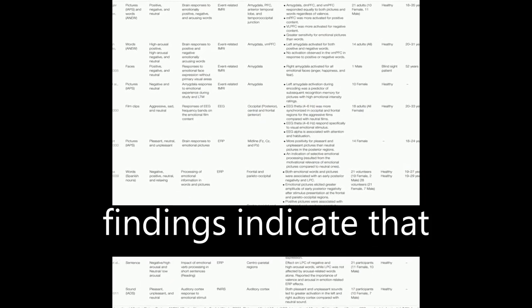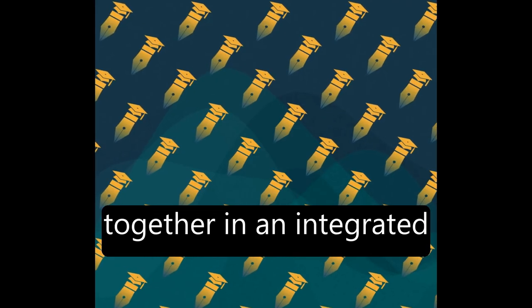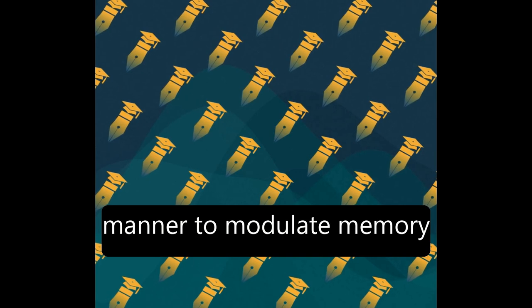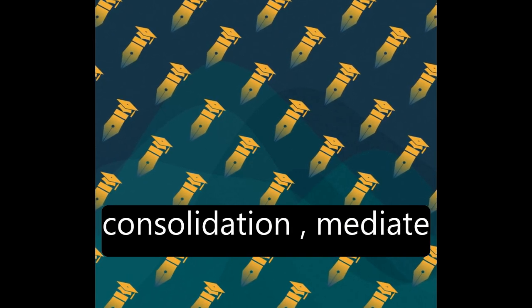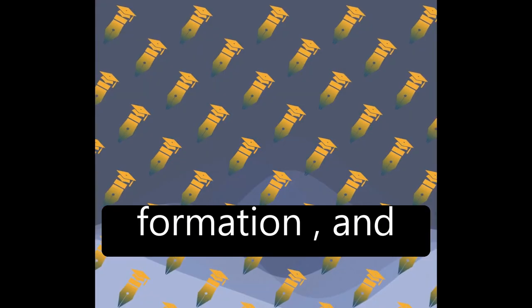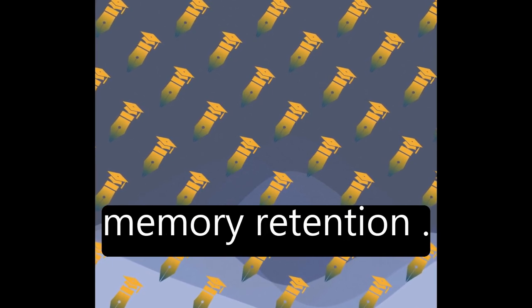Recent neuroimaging findings indicate that the amygdala, prefrontal cortex, and medial temporal lobe work together in an integrated manner to modulate memory consolidation, mediate memory encoding and formation, and facilitate successful learning and long-term memory retention.